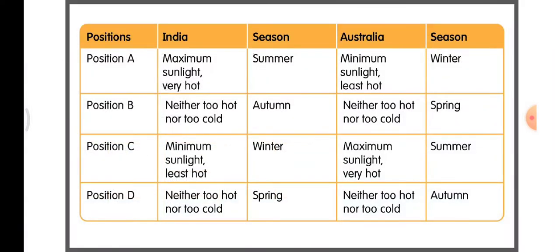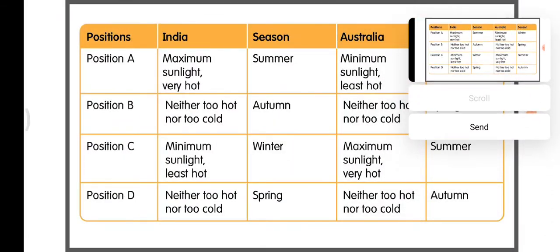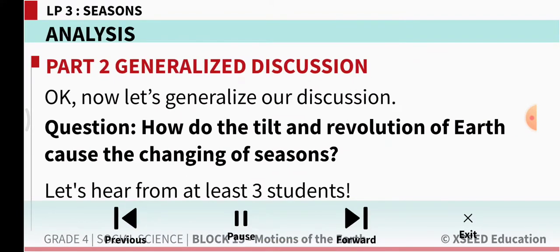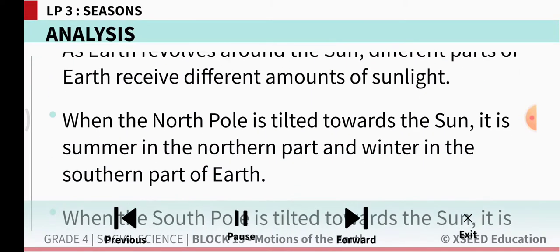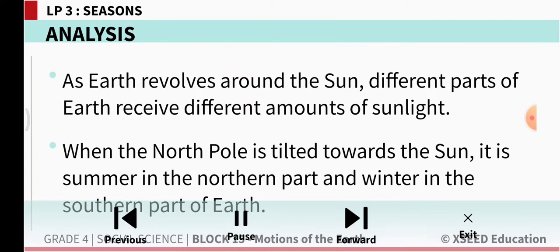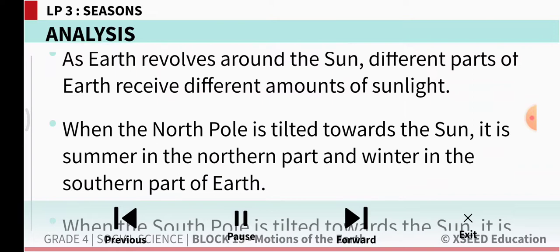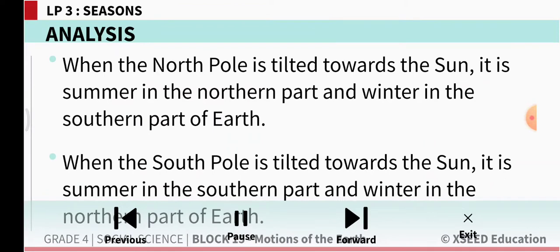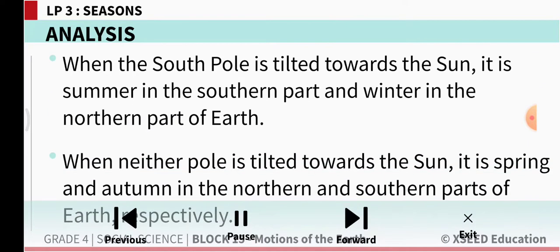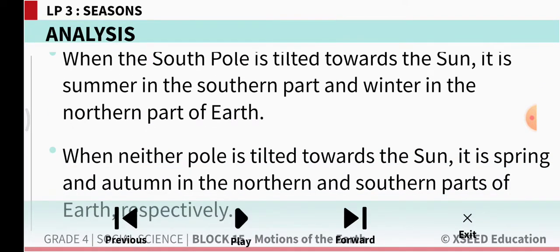We can copy this table in the classwork. How do the tilt and revolution of earth cause the changing of seasons? As earth revolves around the sun, different parts of earth receive different amounts of sunlight. When the north pole is tilted towards the sun, it is summer in the northern part and winter in the southern part. When the south pole is tilted towards the sun, it is summer in the southern part and winter in the northern part. When neither pole is tilted towards the sun, it is spring and autumn in the northern and southern parts of earth respectively.